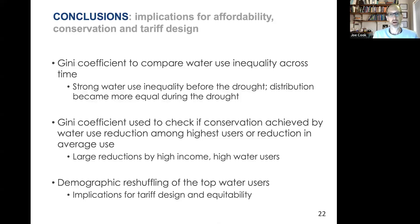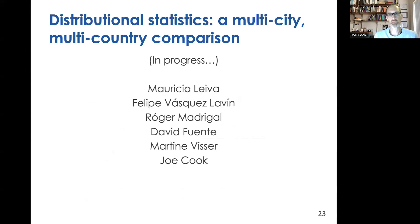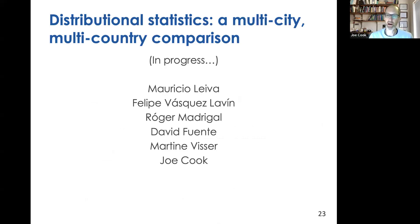Let's shift now to briefly talk about another application of this basic approach — funded by an EFT grant where Roger is the PI. We informally call it the 'Global Urban Water Observatories' project, where we're trying to take advantage of the fact that we have amazing colleagues around the world who have built relationships with water utilities and have access to individual-level water billing data. We're asking: what if we calculated these distributional statistics in different utilities in different countries?